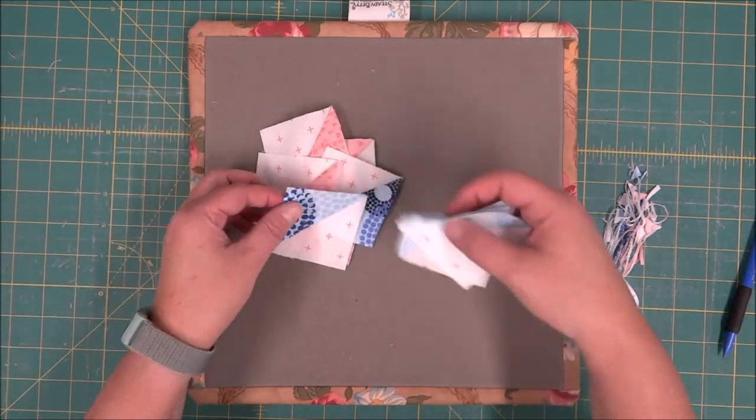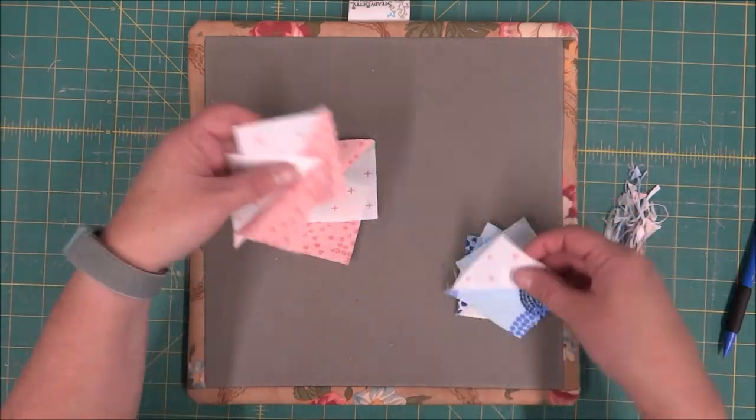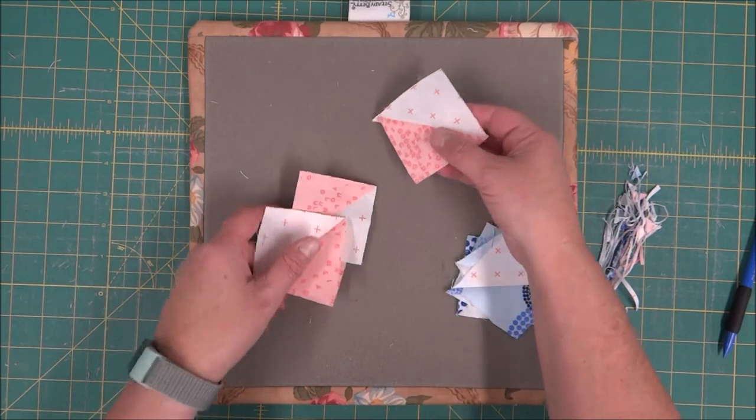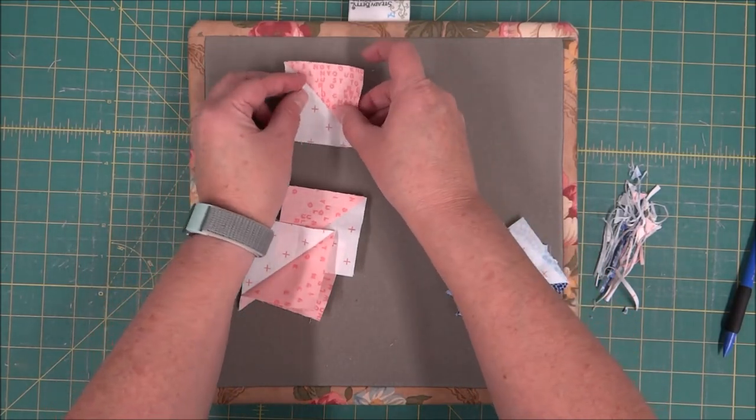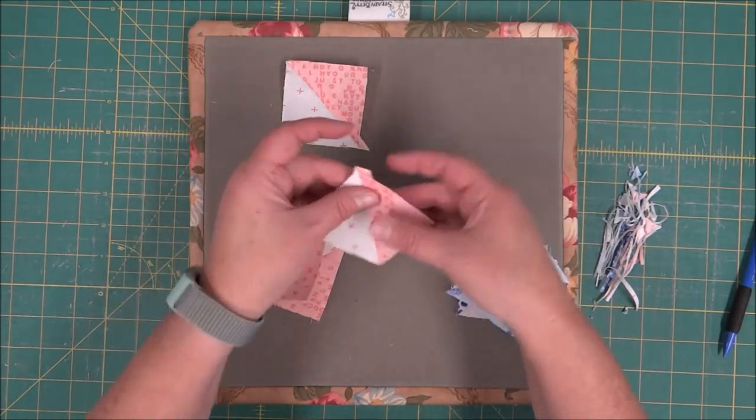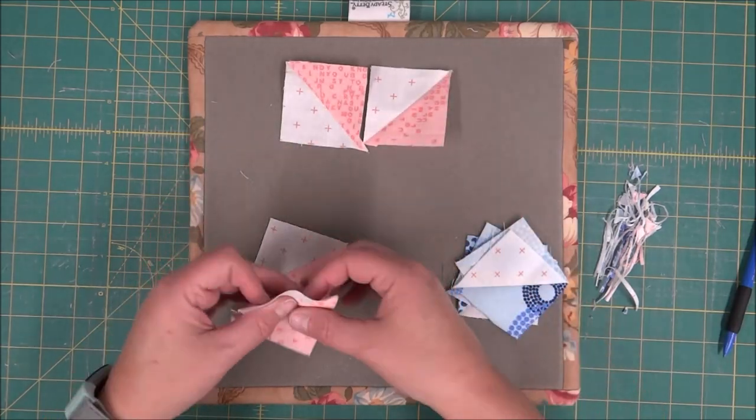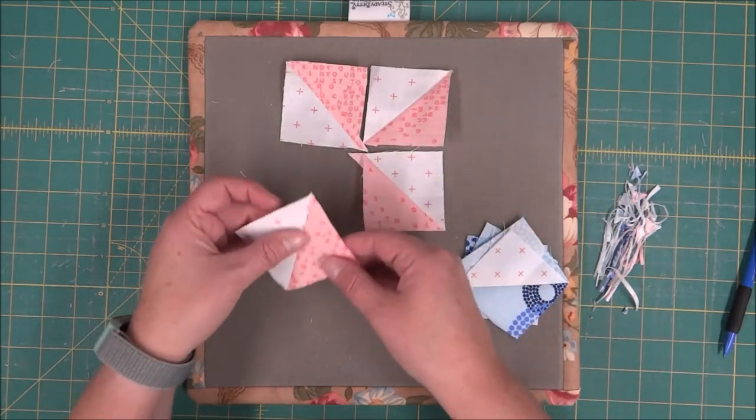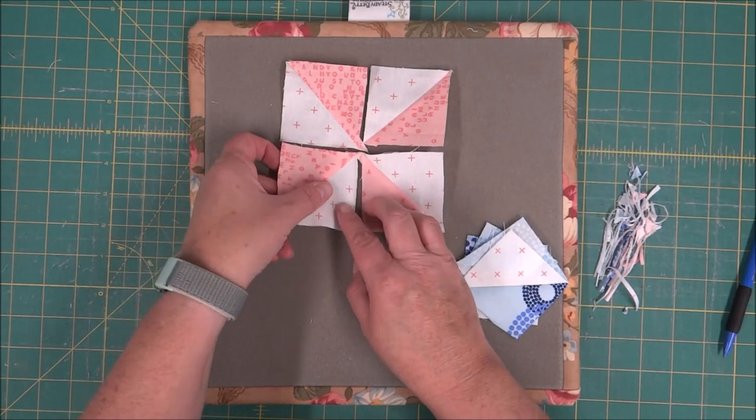Once the blocks are all trimmed, we can go ahead and lay them out. So you just really want to watch your pinwheels and make sure that the half square triangles are in the right direction for it to spin.